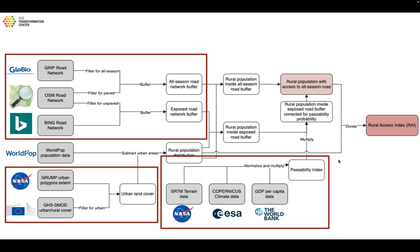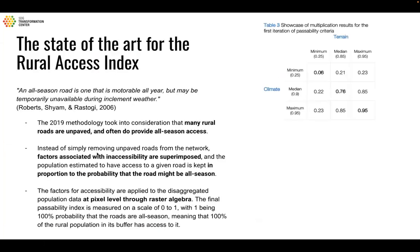We then combine the two clipped population rasters — from paved and unpaved road buffers — and divide by the country's total rural population to get the Rural Access Index. Population data comes from WorldPop, which currently provides the best resolution for population across the globe.